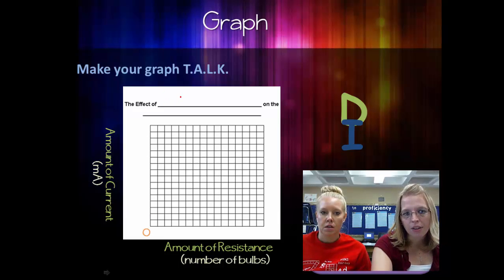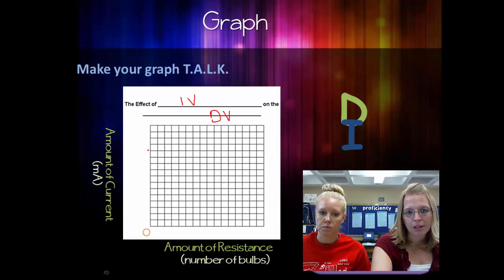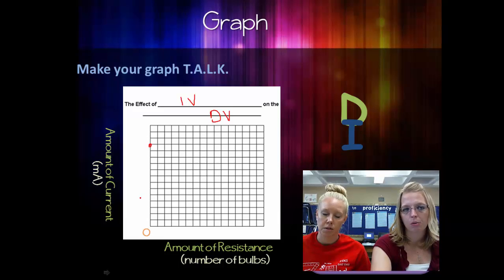And then the effect of the IV on the DV. Again, you have to write these words over and over again. And then our zero is in the corner, ready to go. So if I have zero bulbs, that is a number, I will graph that spot. And he's going to be somewhere on this line, like right there-ish. I don't know, it depends where my numbers are.